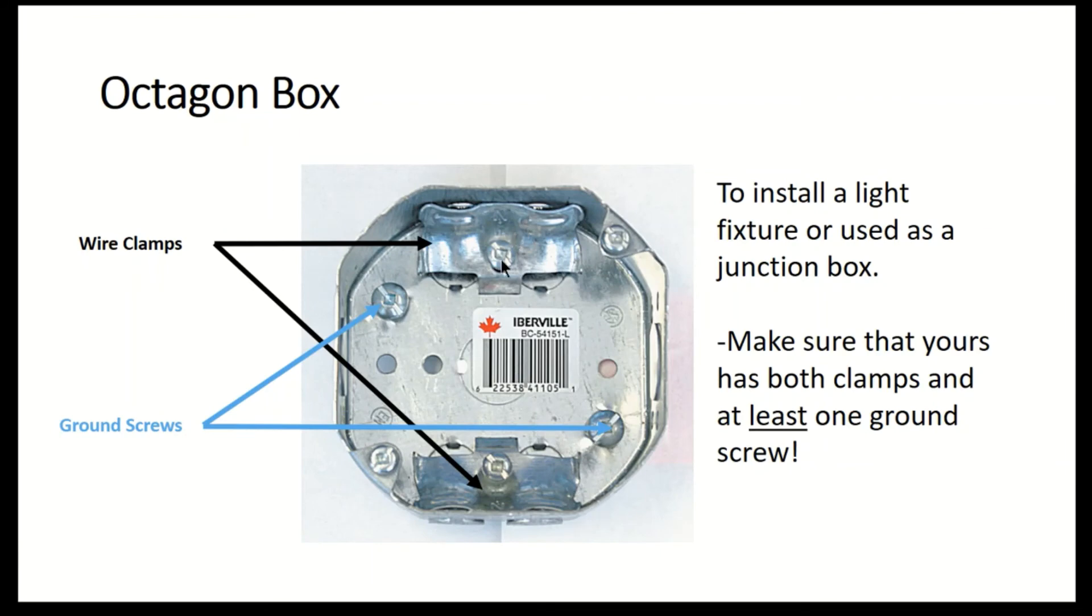Here's the anatomy of the octagon box. You'll see that we have two wire clamps. The wires will come underneath there and then we'll tighten this screw and that provides strain relief. So if the wires are ever tugged they'll never pull out of what we're attached to. We also have two ground screws that come standard on these octagon boxes. One of the ground wires will need to be attached to there. That's making sure that we follow the bonding rules outlined in the Canadian electrical code.